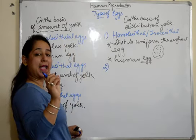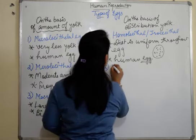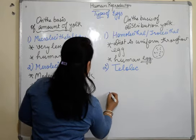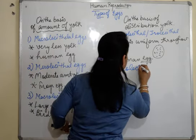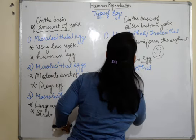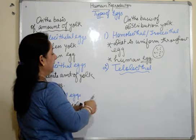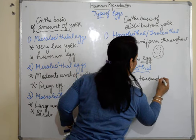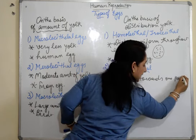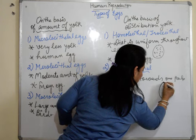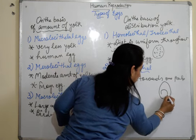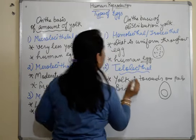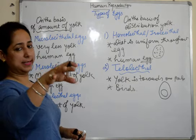The second type on the basis of distribution is telolecithal. In telolecithal eggs, the yolk is concentrated towards one pole or one side. If we look at a hen's egg, the yolk is present towards one side, so the bird's egg is an example of a telolecithal egg.